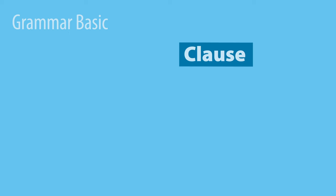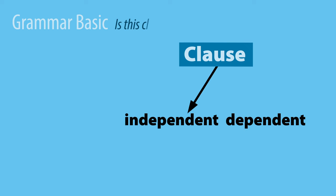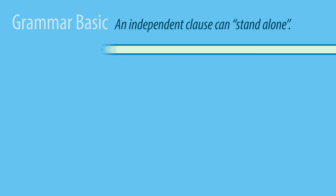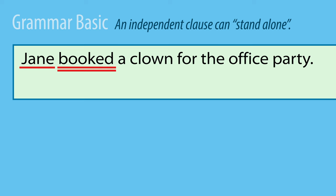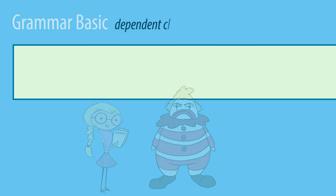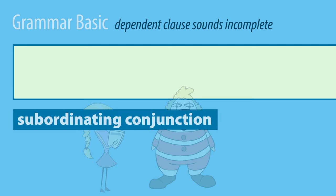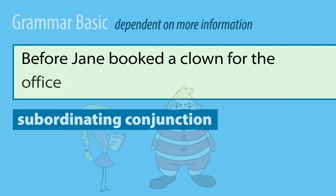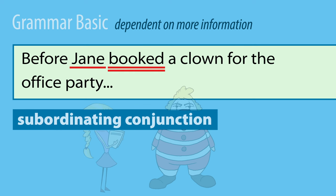Once we find a clause, we need to ask another question that affects punctuation: is this clause independent or dependent? An independent clause can stand alone — it has all the information it needs and sounds complete if read aloud. A dependent clause sounds incomplete. It has both a subject and a verb, but something called a subordinating conjunction makes it dependent on more information to make sense. For example: before Jane booked a clown for the office party. It's still a clause with a subject and a verb, but it is a dependent clause — it sounds like it needs more information. The subordinating conjunction before makes it incomplete.